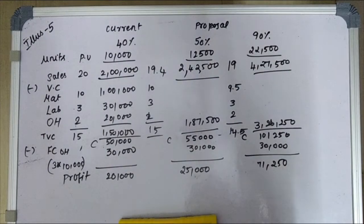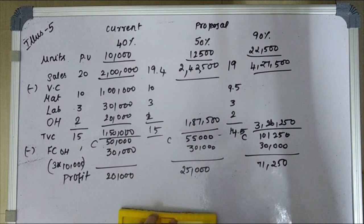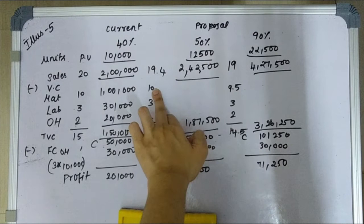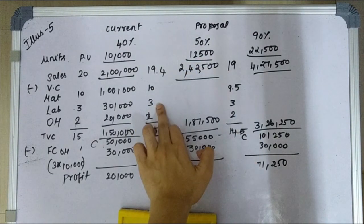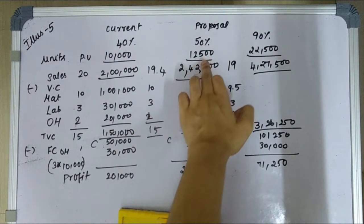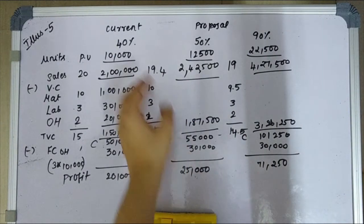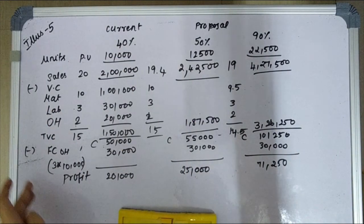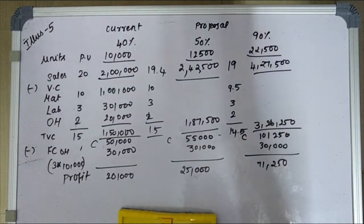That is the illustration. Simple — in the illustration we get units, multiply for total, and the formula is: sales minus variable cost minus fixed cost gives you profit. That is the format.